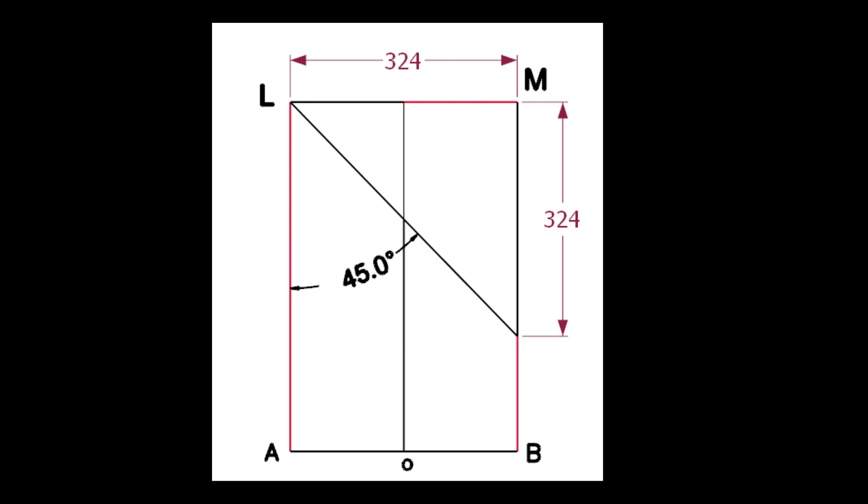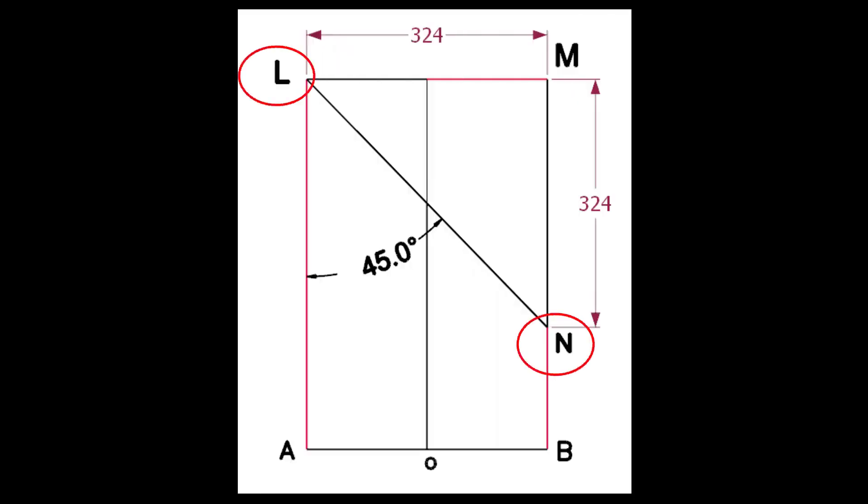Draw the lines AL and BM. Calculate the cutback of the miter. Since the including angle is 45, the cutback is same as the pipe OD. Draw the line LN.